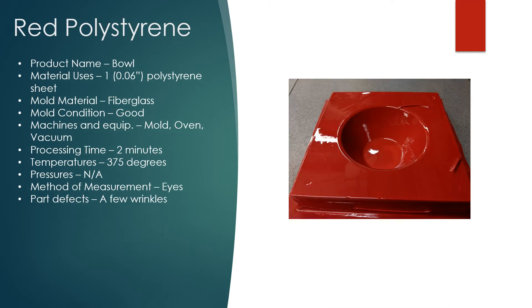Now we have red polystyrene. Same as the last two products, it's a bowl again. However, with the red polystyrene, it was one sheet of .06 polystyrene, so this one was .02 thicker.